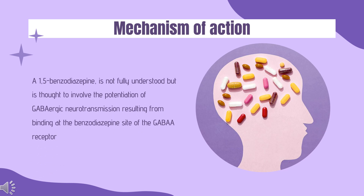Mechanism of Action. The exact mechanism of action for Clobasam, a 1,5-benzodiazepine, is not fully understood, but is thought to involve the potentiation of GABAergic neurotransmission resulting from binding at the benzodiazepine site of the GABAergic receptor. Specifically, Clobasam binds to the interface of the alpha-2 and gamma-2 subunit of the GABAergic receptor. It has a greater affinity for the alpha-2 subunit than the alpha-1 subunit compared to other 1,4-benzodiazepines. Binding of Clobasam to the GABAergic receptor causes chloride channels to open, resulting in an influx of chloride and thus hyperpolarization of neurons.